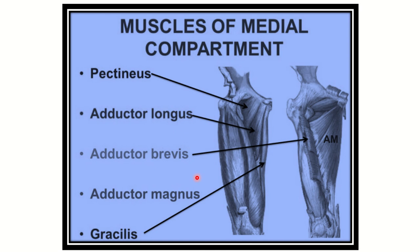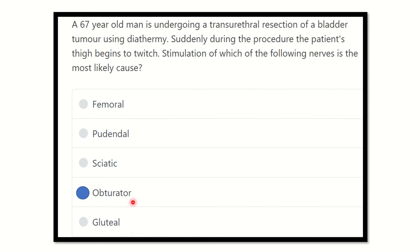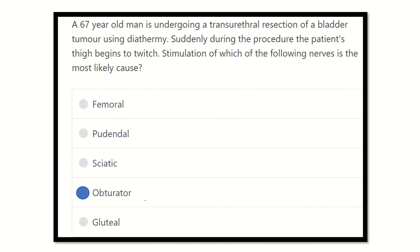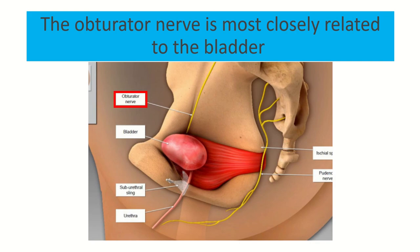Due to any injury or insult to the obturator nerve, it may contract, causing twisting of the thigh muscles. So our answer is the obturator nerve, because it is very close to the bladder, and during the trans-urethral resection of the bladder tumor (TURBT), the diathermy may touch the obturator nerve.